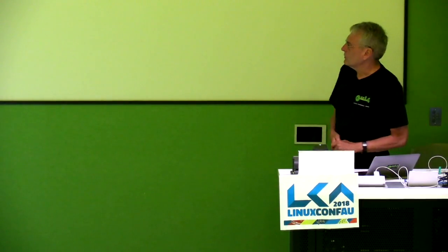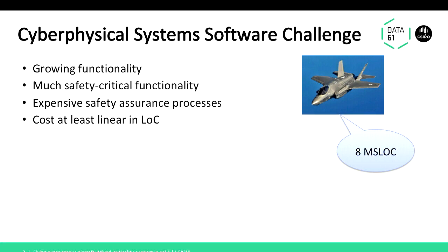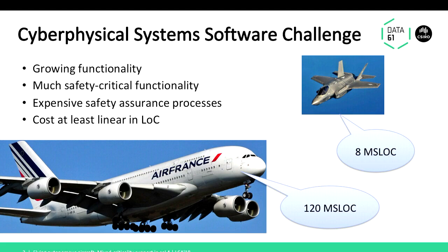The cost of these certifications is enormous and at least linear in the number of lines of code — probably super-linear. To give a bit of context: the F-35, often called the flying heap of crap in the Australian press, has 8 million lines of code. The greatest aircraft from the customer's point of view has 120 million lines of code. So these are enormously complex systems. How do you manage getting this software right and certified?